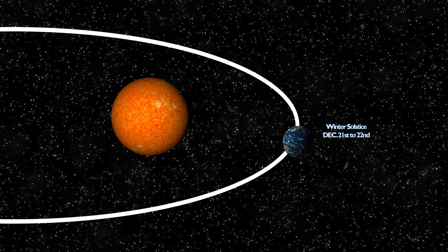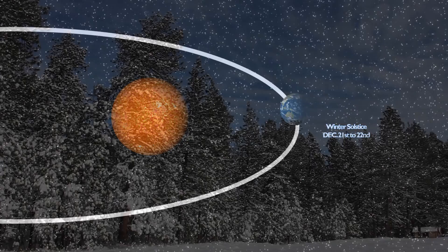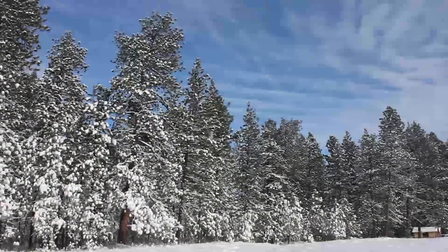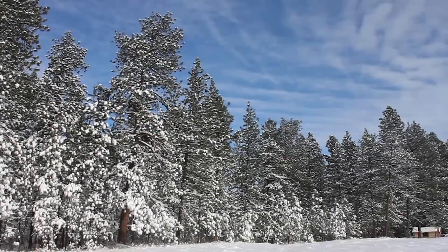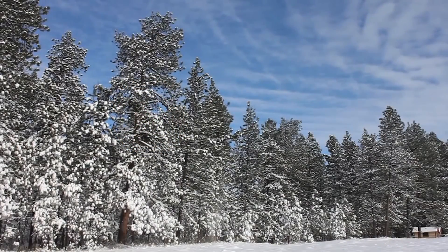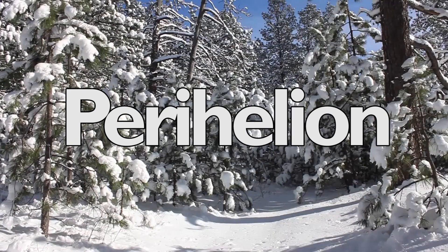This causes winter in the northern hemisphere and summer in the southern hemisphere, where the south pole is closest to the sun. When the northern hemisphere is experiencing winter, the earth is closest to the sun, which is called perihelion.